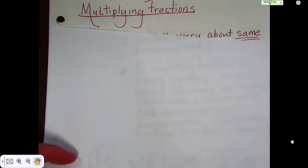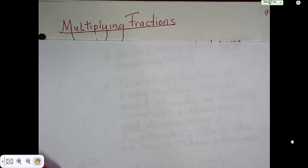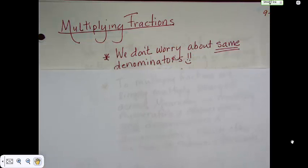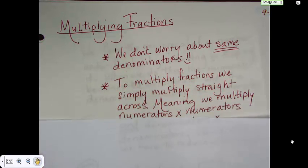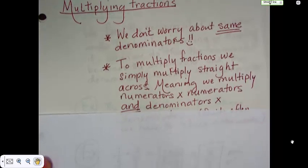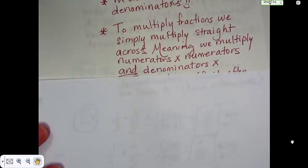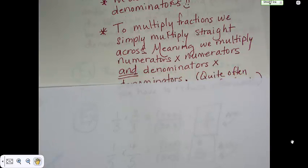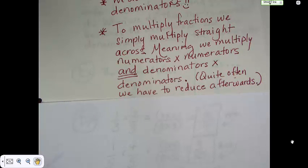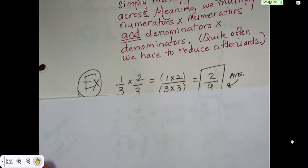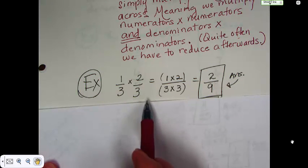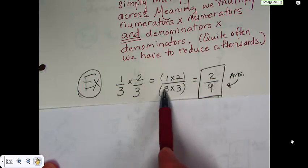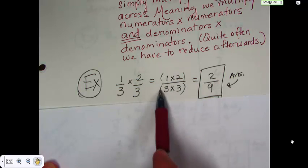Okay. Let's talk about multiplying fractions. Again, not difficult. Something you've been exposed to before. When we're multiplying fractions, we don't worry about the denominators being the same. And to multiply fractions, we simply multiply straight across. Meaning we multiply the numerators times the numerators and the denominators times the denominators. Quite often, we have to reduce afterwards. That isn't unusual, especially in multiplication, to have to reduce. Okay. Here's a good example. 1 third times 2 thirds. In this case, the denominators were the same. 1 times 2 over 3 times 3. 1 times 2 is 2. 3 times 3 is 9.